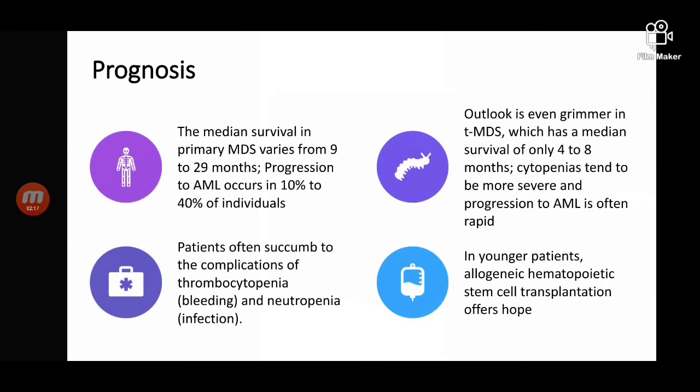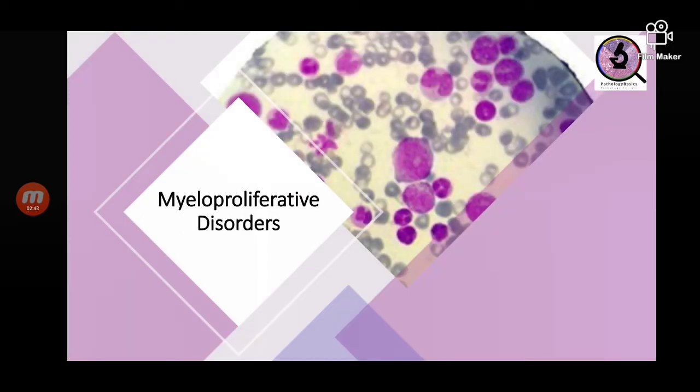Prognosis of MDS: median survival ranges from 9 to 29 months. Progression to AML occurs in nearly 10 to 40 percent of individuals. Patients succumb to complications of thrombocytopenia and neutropenia — bleeding and infection. Outlook is even worse in tMDS patients, whose survival is merely four to eight months. In younger patients, stem cell transplantation has offered some hope of survival.